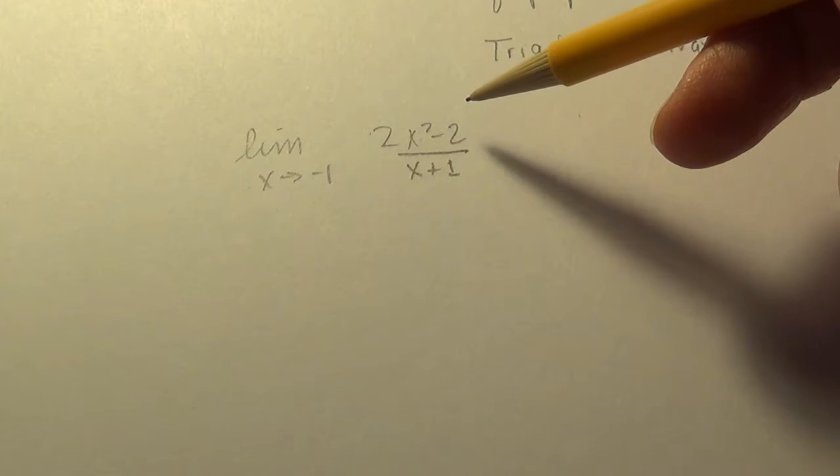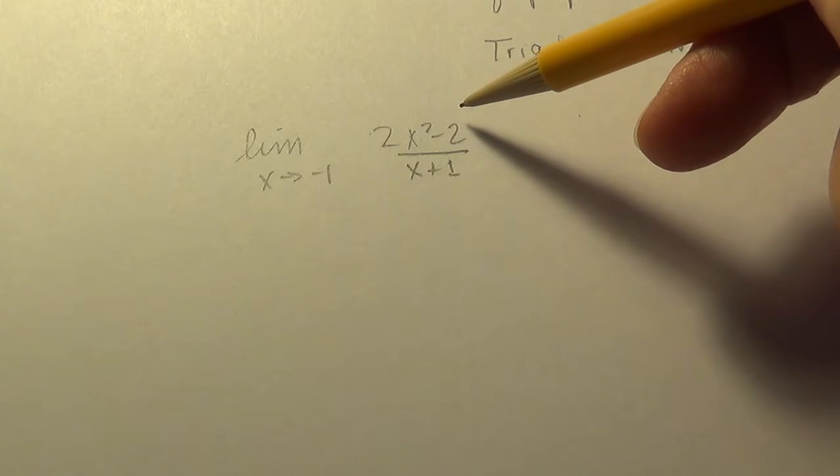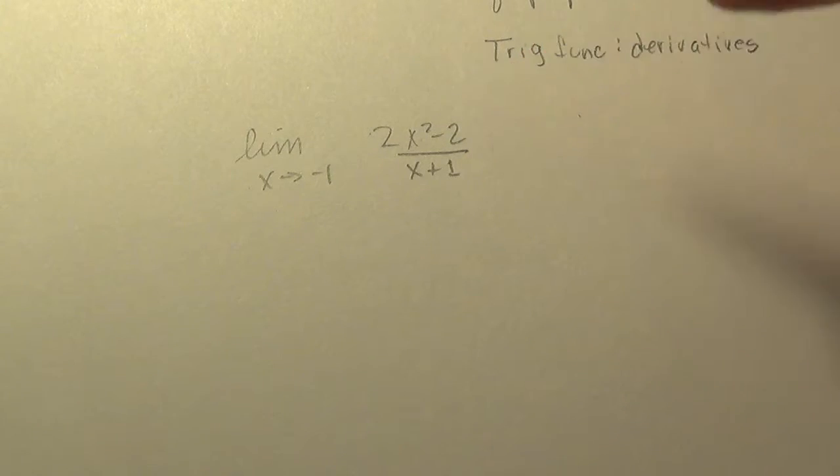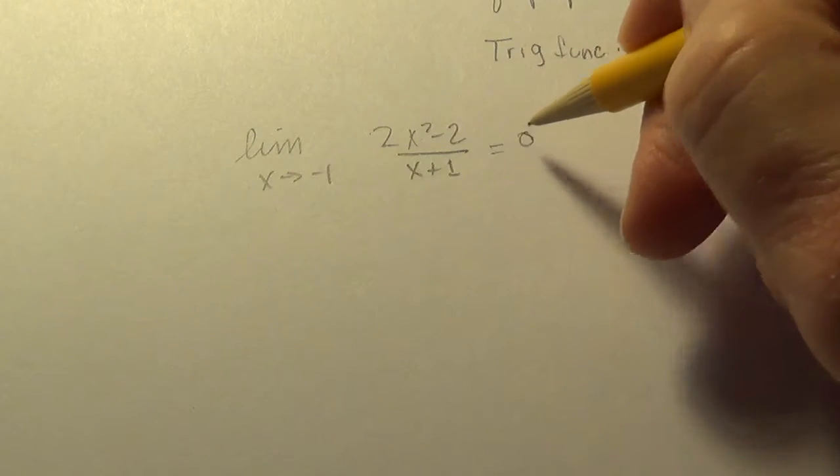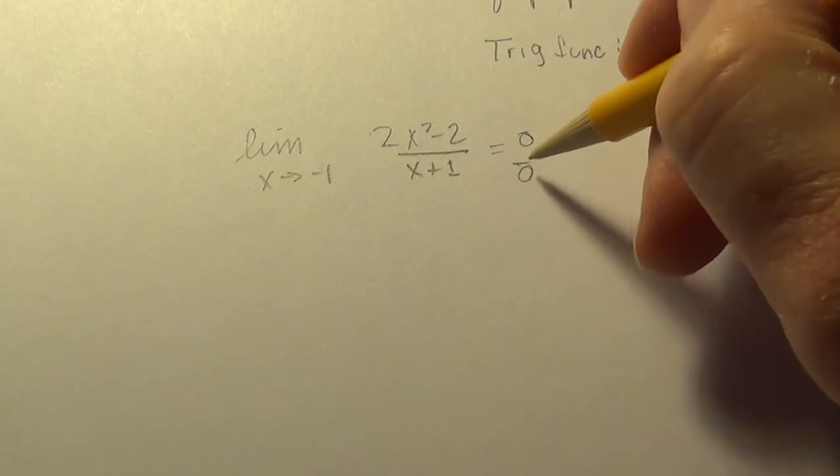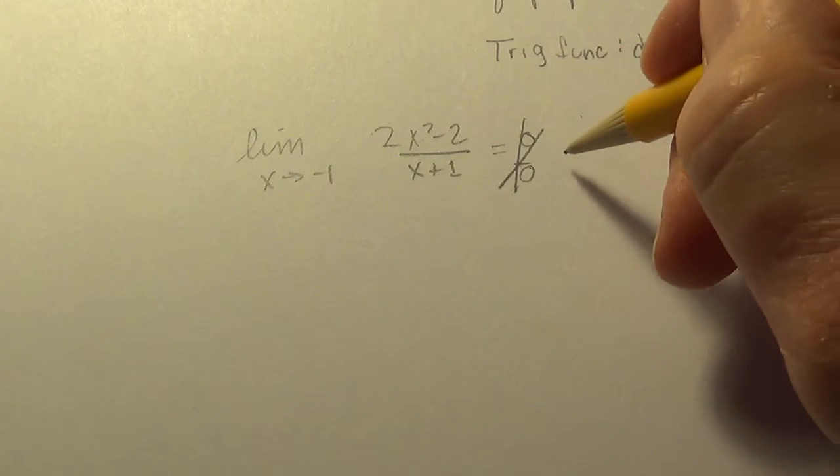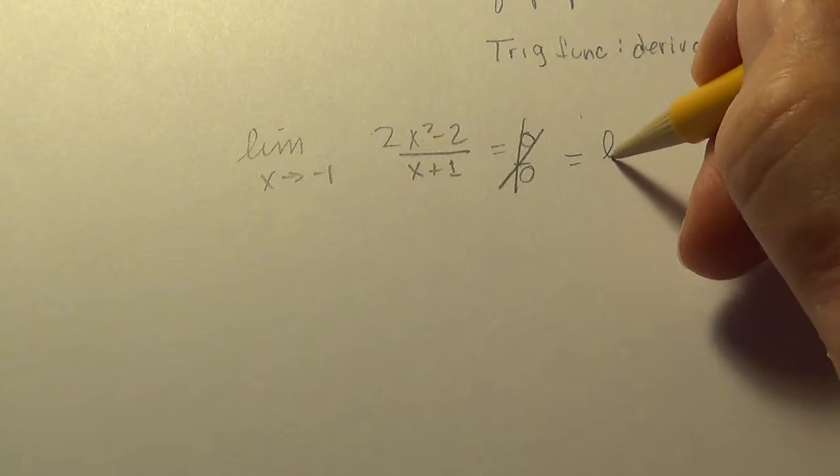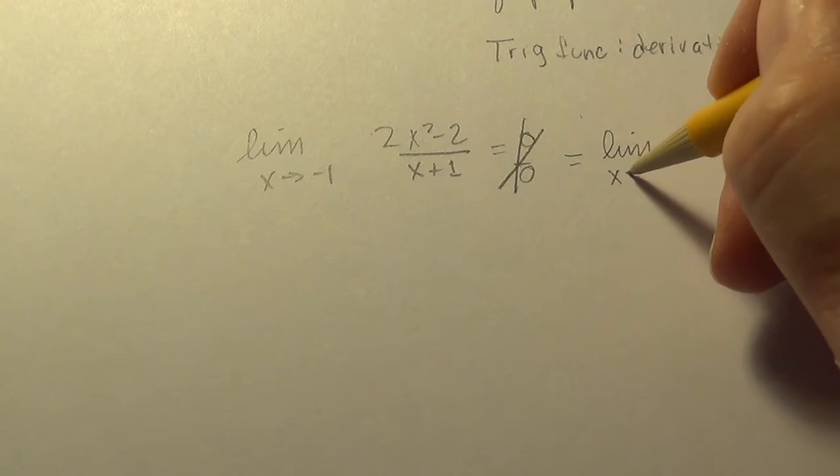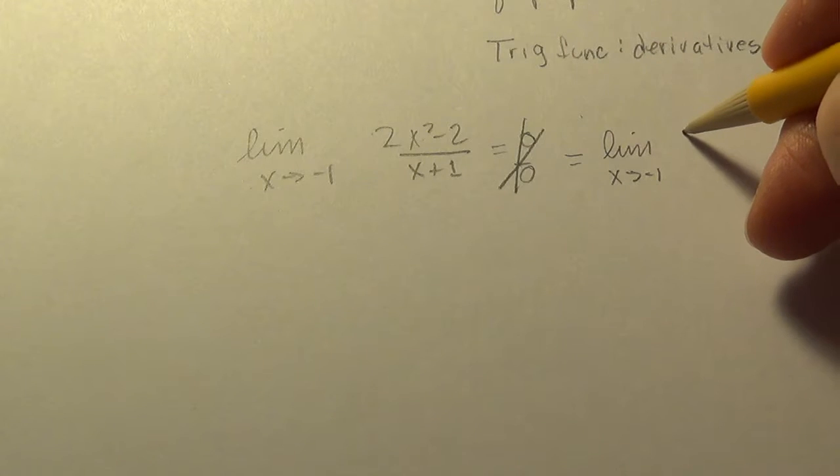So if you do put negative 1 in here, you get 2 times negative 1 squared which is 2 minus 2 is 0, and then you get 0 on the bottom. So that flubbed, but we tried.